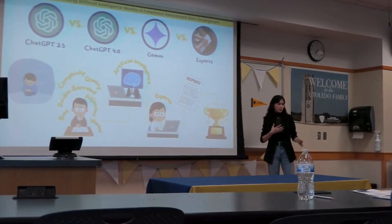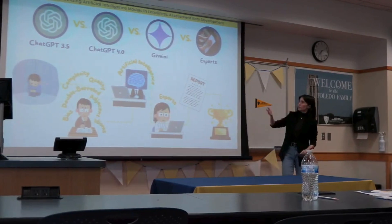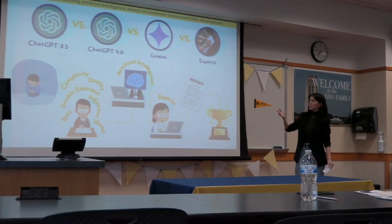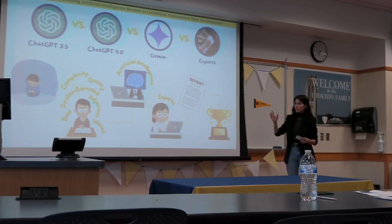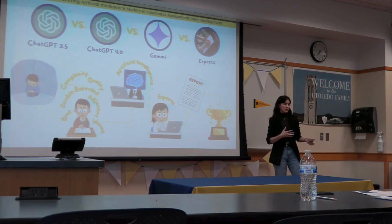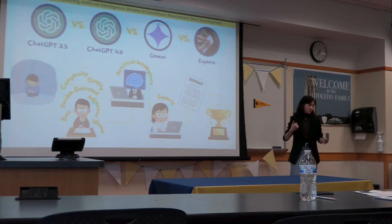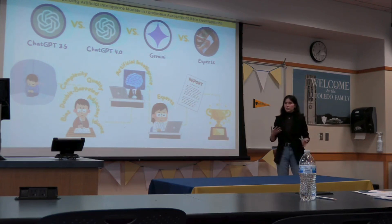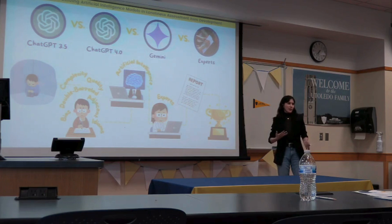Our team used ChatGPT 3.5, ChatGPT 4.0, and Gemini Pro and Ultra to evaluate assessment items. We looked at existing loneliness measures and modified them to intentionally contain bias, adjacency, double-barrel characteristics, and other flaws to see if ChatGPT or Gemini could identify them.